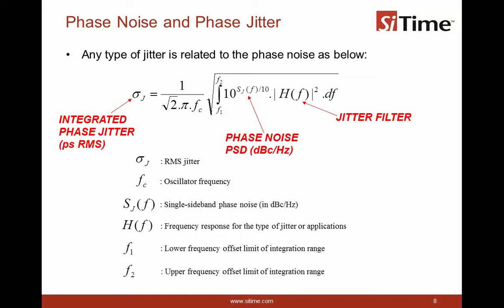And different types of applications and jitter definitions would have different types of filters shown here as jitter filter H of F. So, this shows that phase noise and phase jitter are related using this formula, which is an industry-wide formula used for computing phase jitter.